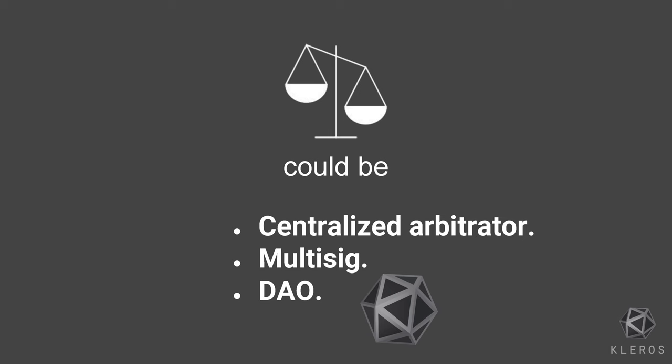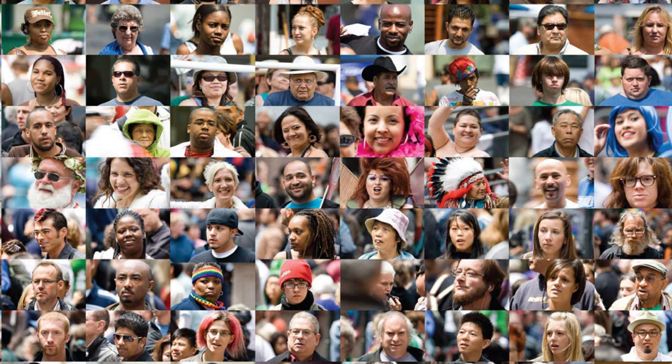For now we've had the arbitrator, which could have been anything — any kind of mechanism. It could be a central arbitrator, it could be a multisig, but that's not really interesting in terms of cryptoeconomics. It can also be a DAO, and that's what Kleros is: it's an arbitration DAO.